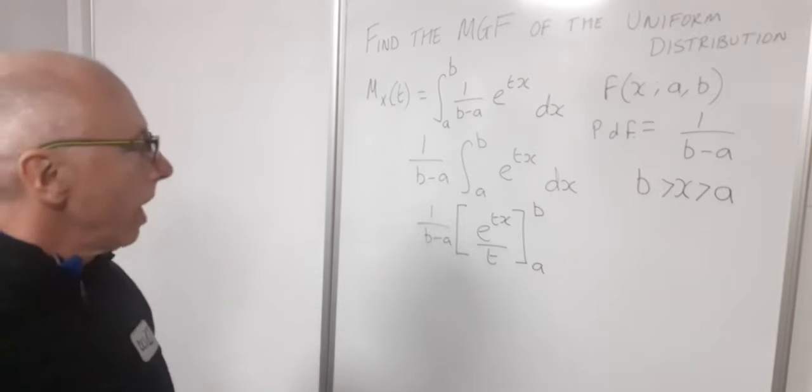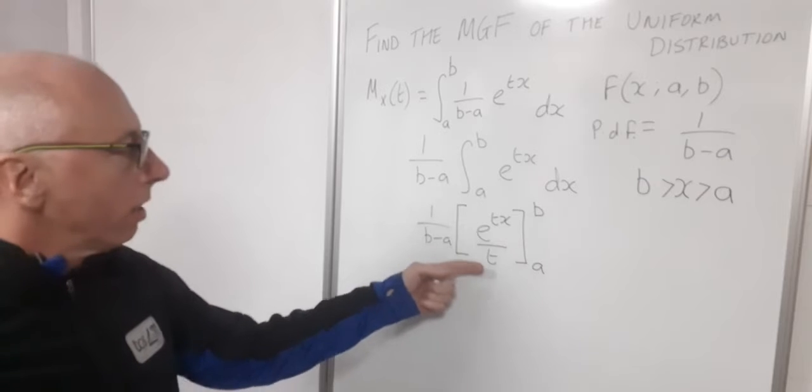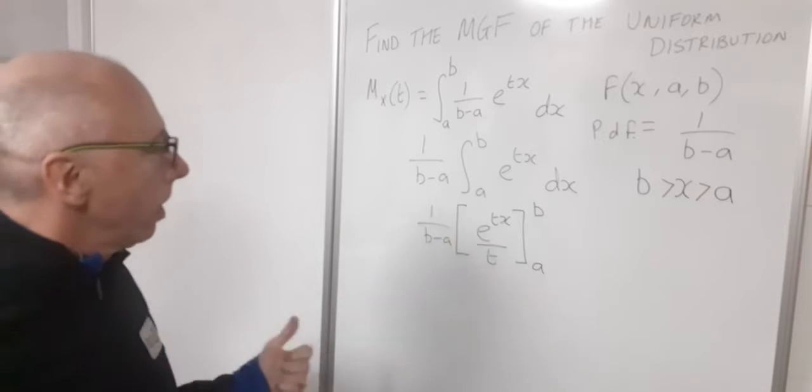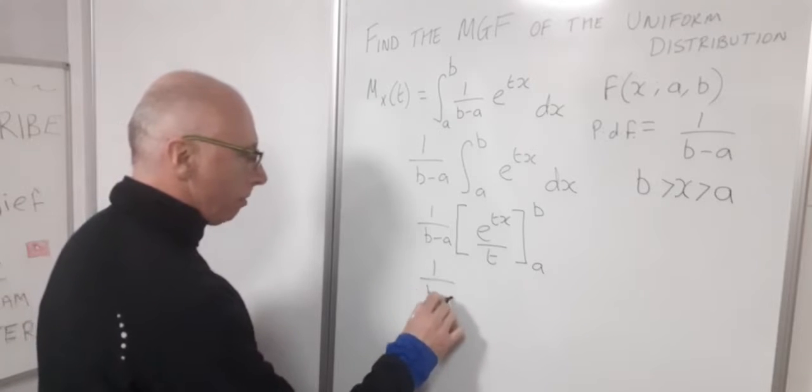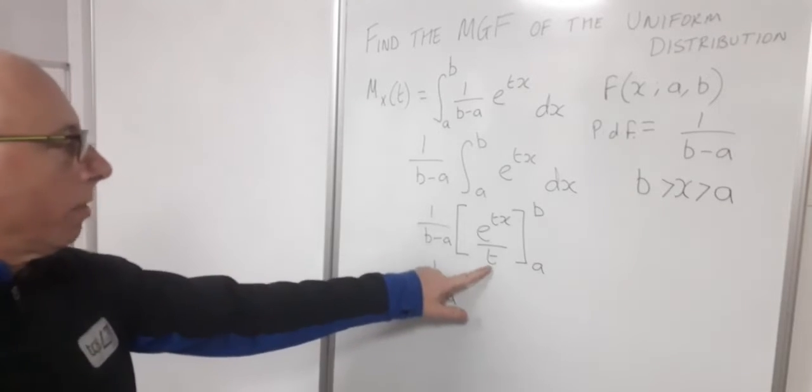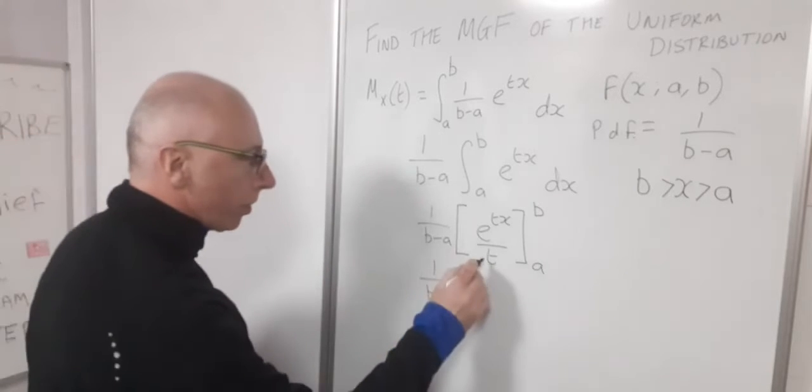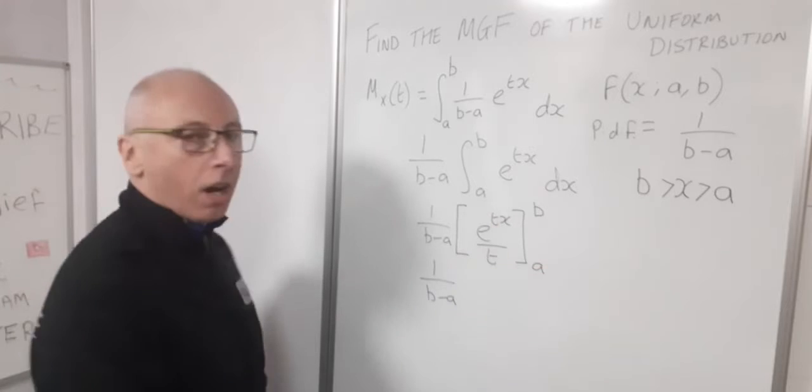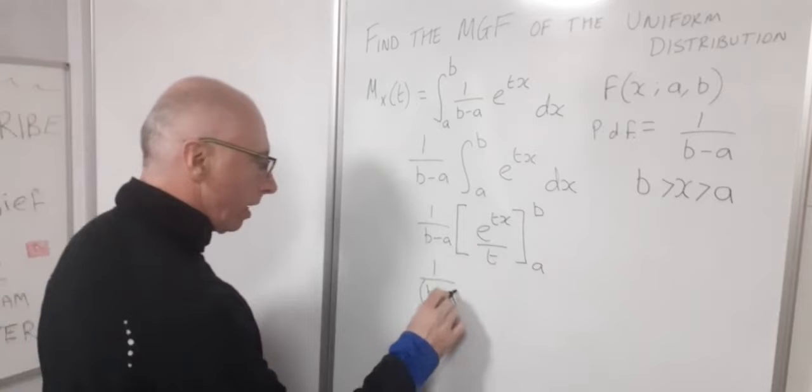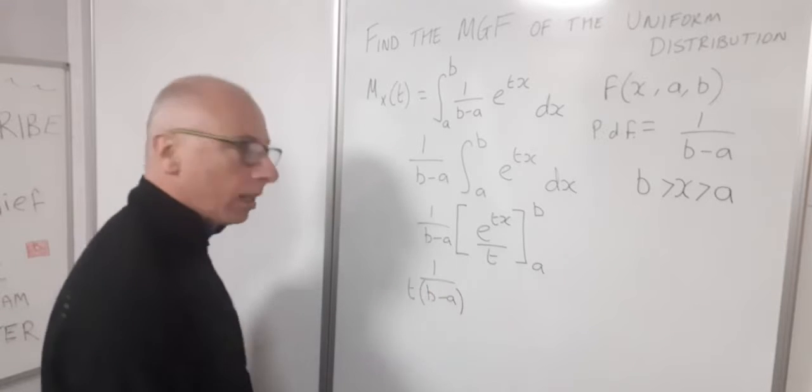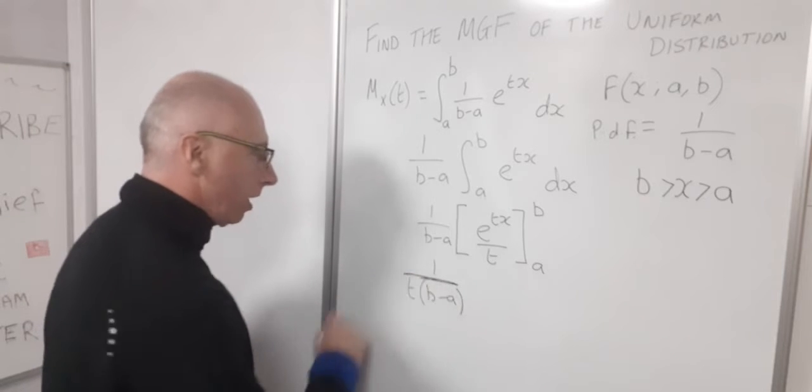So now wherever we see an X, we'll plug in a B and subtract the value when X is A. So let's do that. So I'll write 1 over B minus A. Now this T on the bottom, we can bring this out to the front because that's not to do with our X. So let's bring this T out here. So what we can do is if we bracket this and write T like that. So 1 over T times B minus A in brackets.